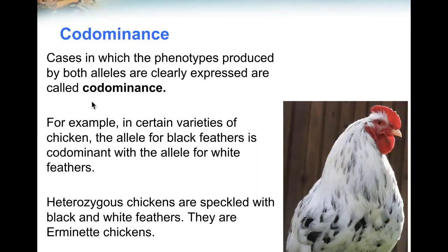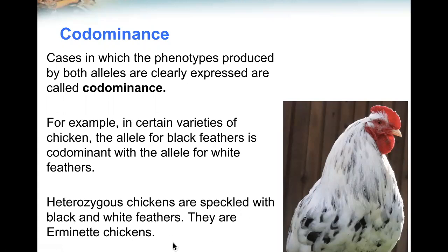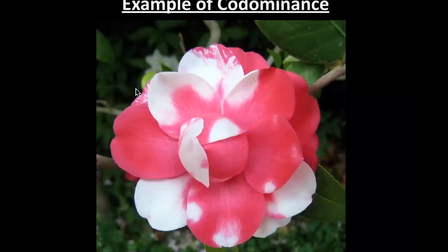Cases in which the phenotypes produced by both alleles are completely expressed are called codominance. For example, in certain varieties of chickens, the allele for black feathers is codominant with the allele for white feathers. Heterozygous chickens are speckled with black and white feathers — they are erminette chickens. This is an example of codominance. It's not pink, but red and white.